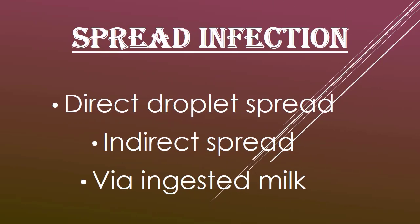Spread of infection occurs through three routes: direct droplet spread, indirect spread, or through ingested milk. Direct droplet spread occurs from person to person by inhalation of airborne bacilli that have been coughed or sneezed into the atmosphere. Indirect spread occurs through dishes, clothing, and other articles of daily use laden with bacilli. Through ingested milk, ingestion of contaminated milk causes infection of the bovis type.